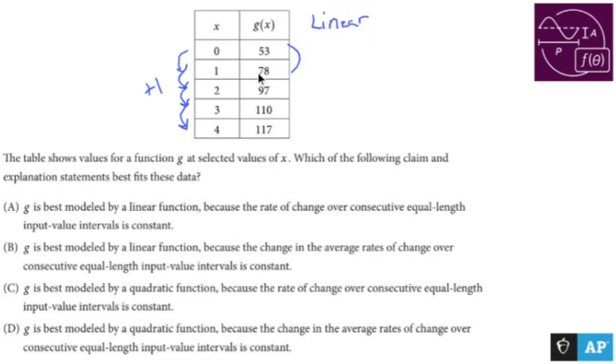So in order to get from 53 to 78, I add 25. In order to get from 78 to 97, I don't add 25, I add 19.